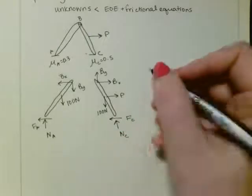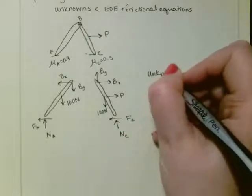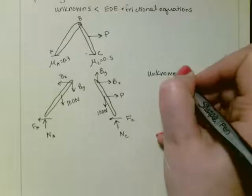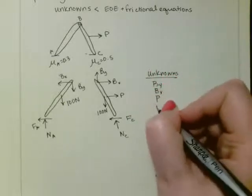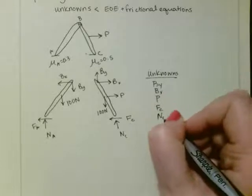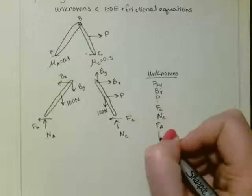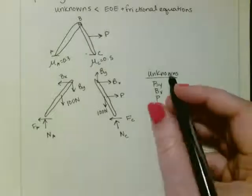So now when I look at this, let's write out my unknowns. I don't know BY, BX, P, FC, NC, FA, or NA. So I've got a total of seven unknowns.